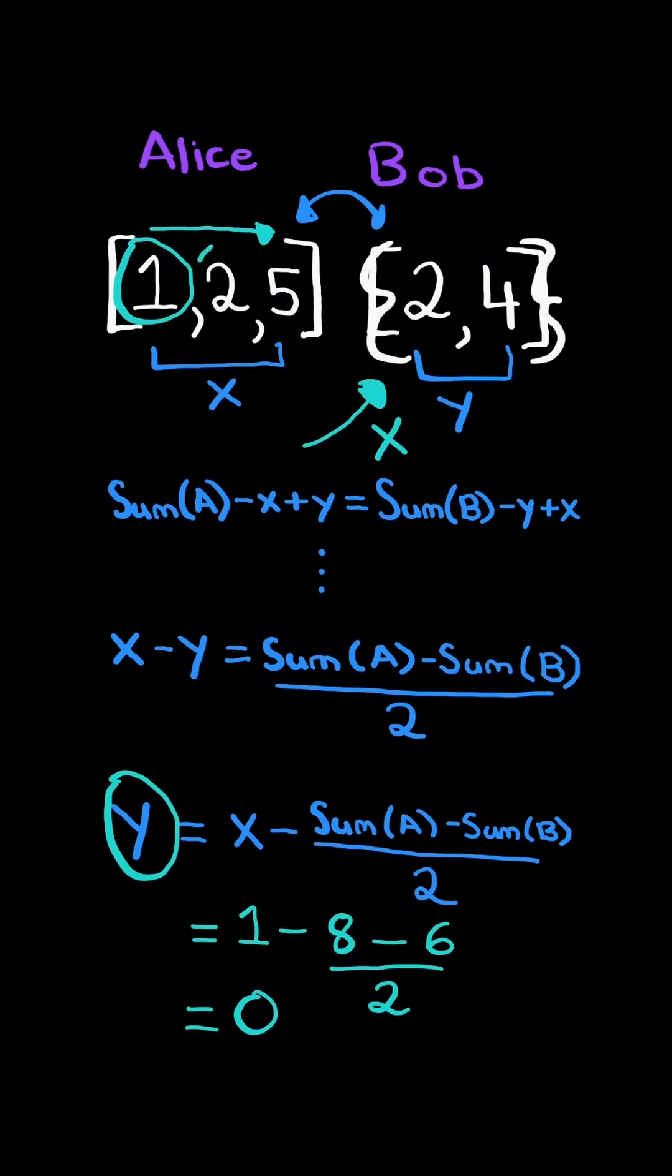So we move on and check the next element in Alice's list. We calculate the equation for Y. It equals 1. We check if 1 is in Bob's set. And once again, it's not.